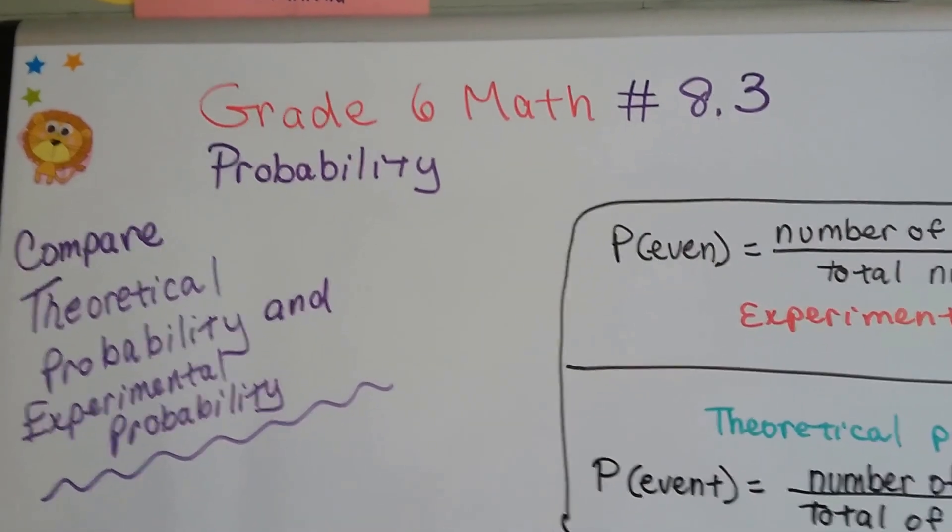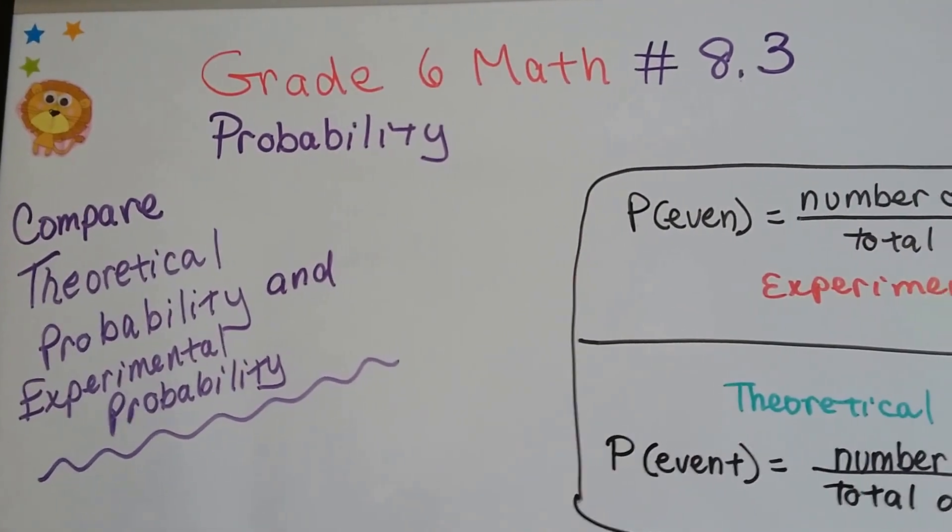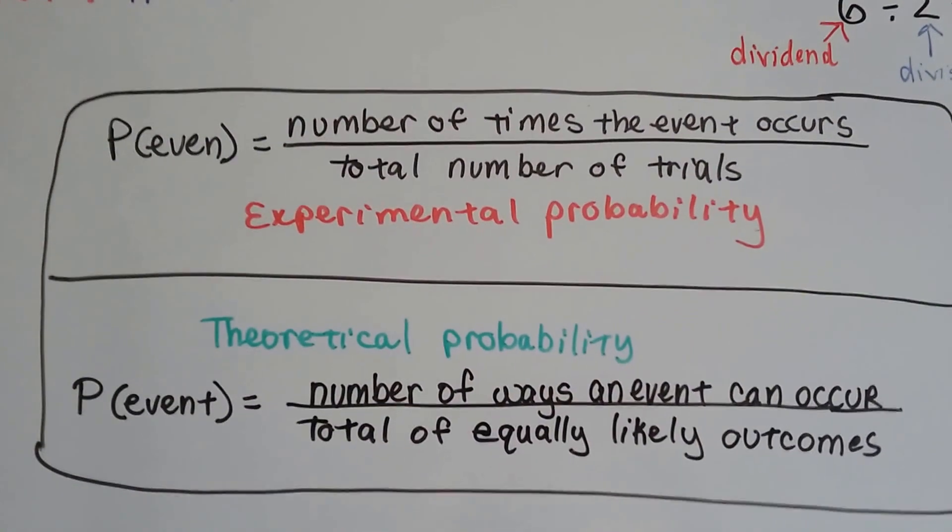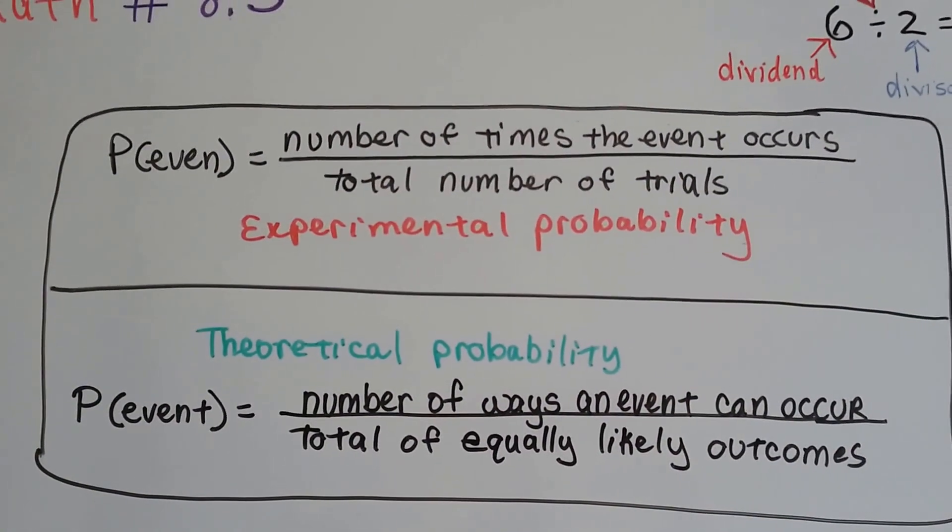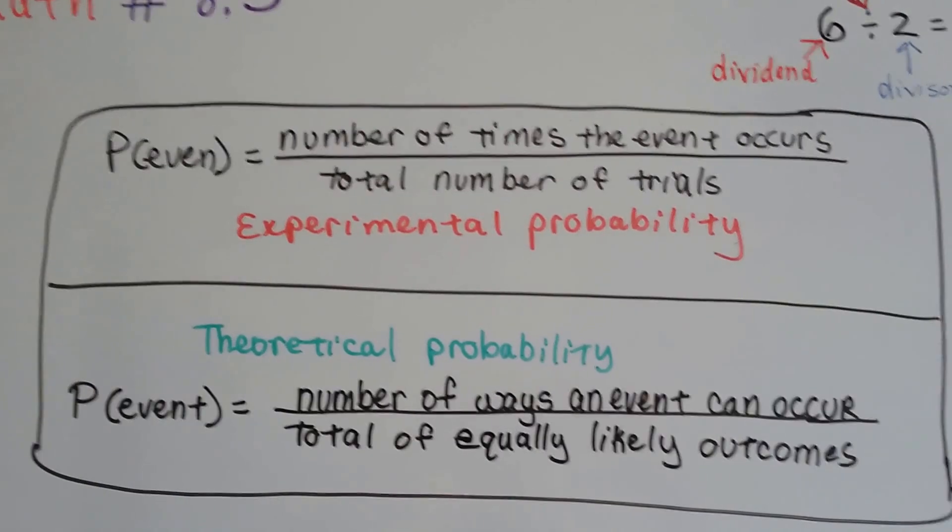Grade 6 math number 8.3 compare theoretical probability and experimental probability. In experimental probability, we actually are figuring the number of times the event occurs over the total number of the trials as a ratio.